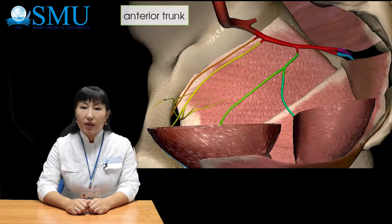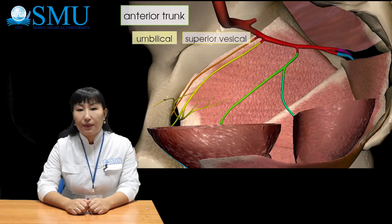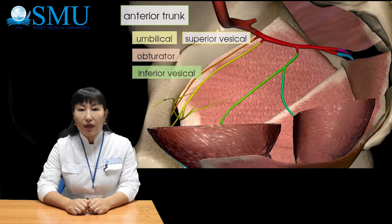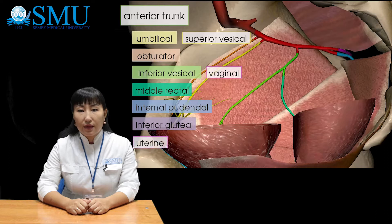Next we will talk about the anterior trunk. The anterior trunk gives off the following branches: umbilical artery, superior vesical artery, obturator artery, inferior vesical artery, vaginal artery, middle rectal artery, internal pudendal artery, inferior gluteal artery, and uterine artery.